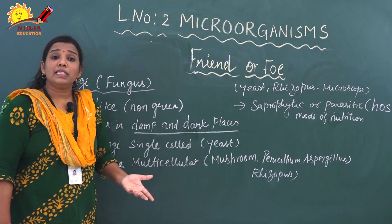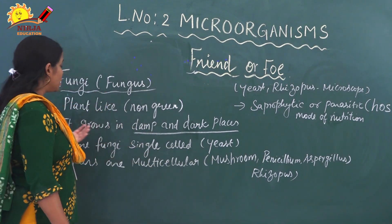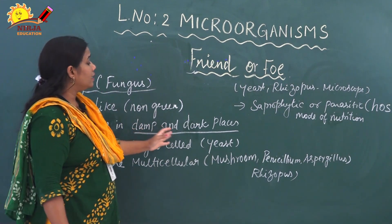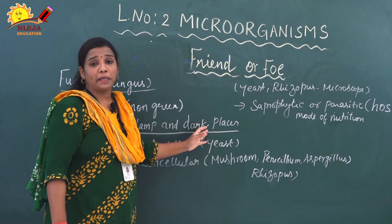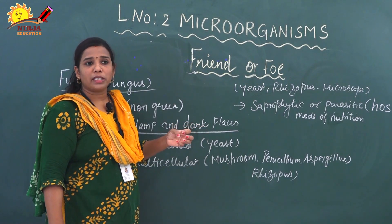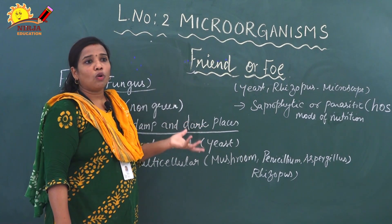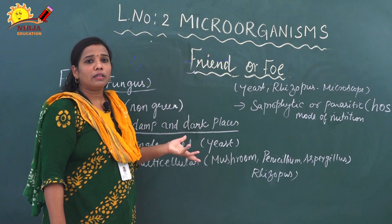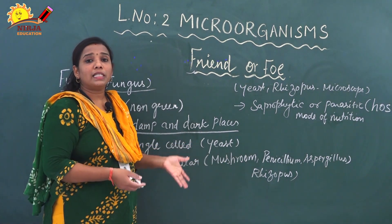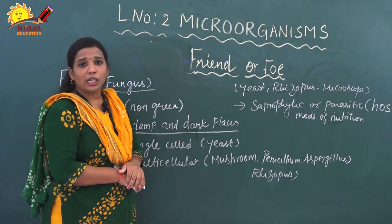Where does fungi live? Mostly it is present in damp and dark places. It needs some moisture content. Since chlorophyll is not present, it lives in dark places only.